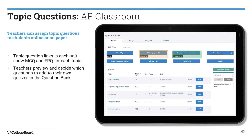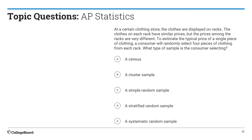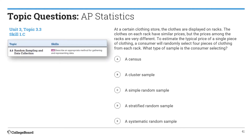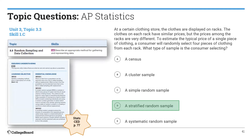You'll see the formative tag. Here's an example of a question. Whether or not you are mathematically inclined, this is a relatively straightforward question from AP Statistics that tests that pairing — random sampling and data collection with skill 1C. All students had to do was describe an appropriate method for gathering and representing data. All of these answer choices are methods for gathering and representing data, and there is correlation backed to the required course content. There's a focus on both the skill and the content, and I can see in the essential knowledge a definition for what a stratified random sample is.